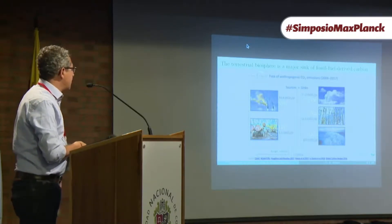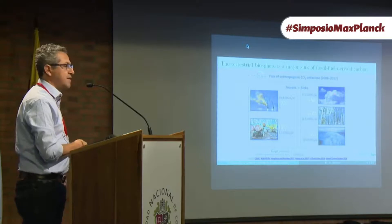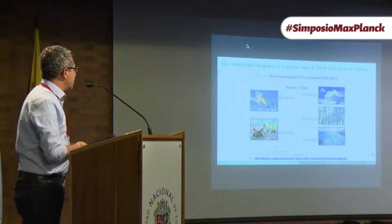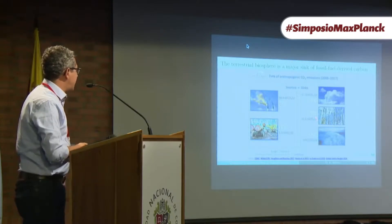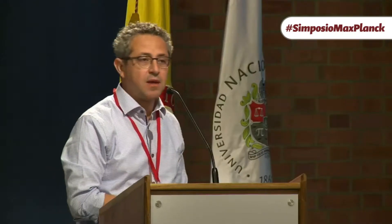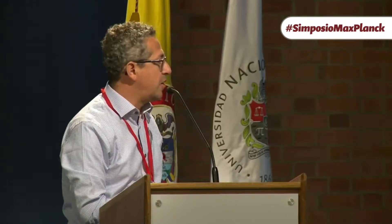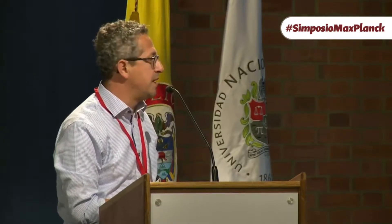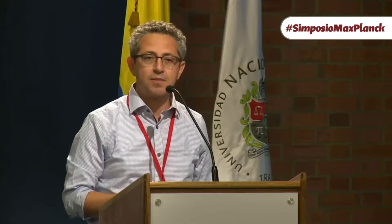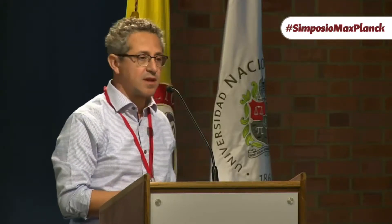From all the carbon that goes into the atmosphere, not all of it stays there. Only 44% of that carbon stays in the atmosphere. The other part goes either to the terrestrial biosphere or to the oceans. About 30% of the carbon we emit from anthropogenic activities actually ends up in forests, grasslands, and terrestrial ecosystems. Therefore, it's extremely important to understand the fate of the carbon that goes into the terrestrial biosphere.